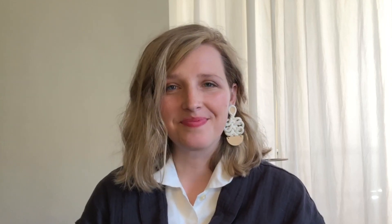How do they capture this attention? They often use a bigger, bolded font and enticing words to attract attention. You can hack that — just open your news app, scroll through it, and click on a headline or an opening line to an article that gets your attention. Then use the same structure to write the first line of your caption.